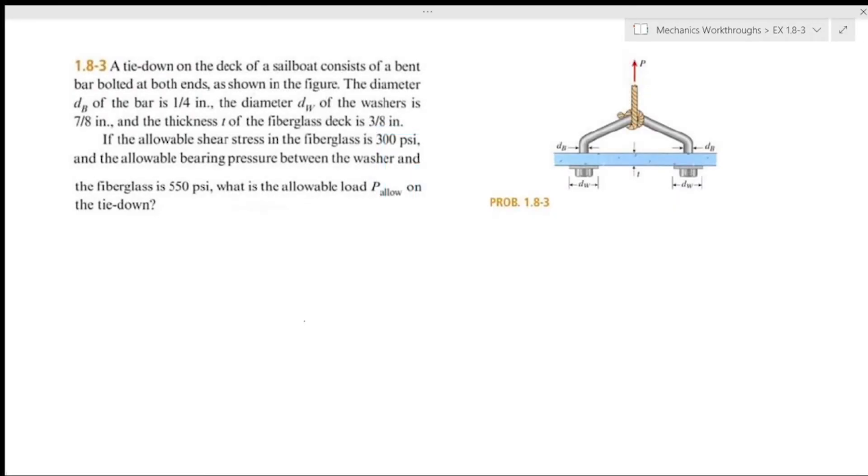This is example 1.8-3. A tie down on the deck of a sailboat consists of a bent bar bolted at both ends as shown in the figure.